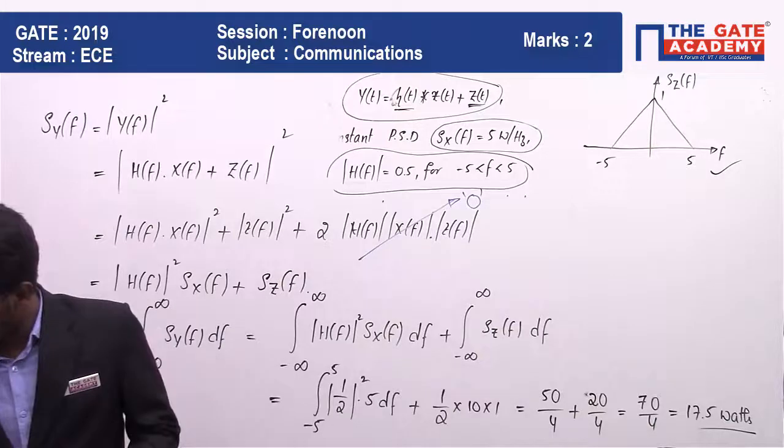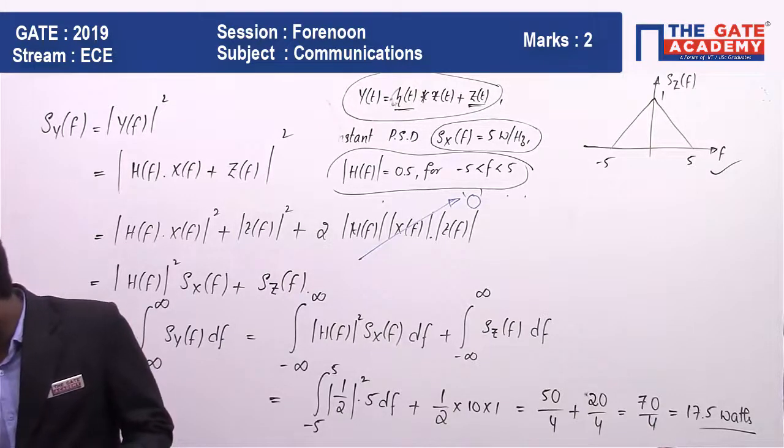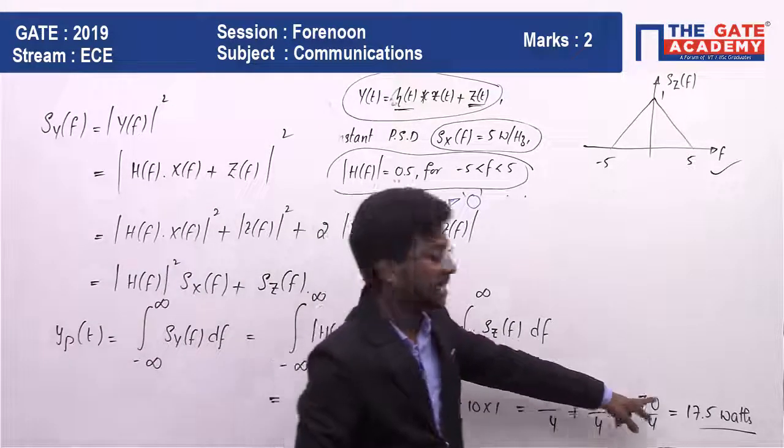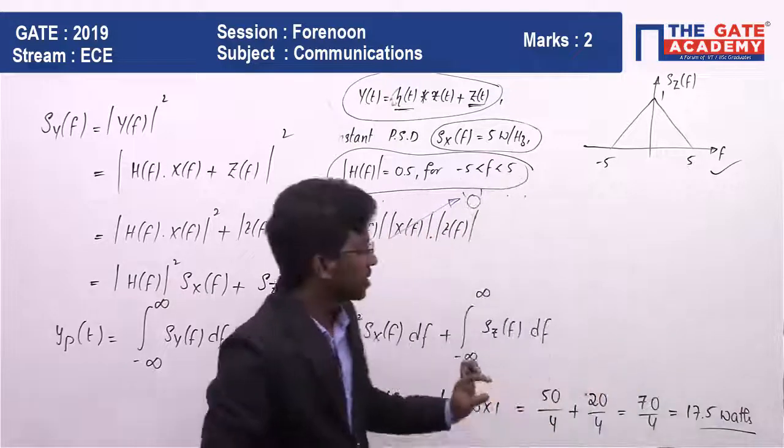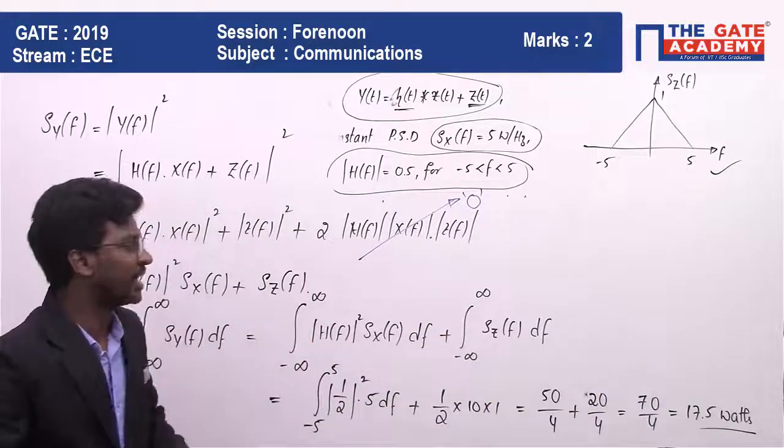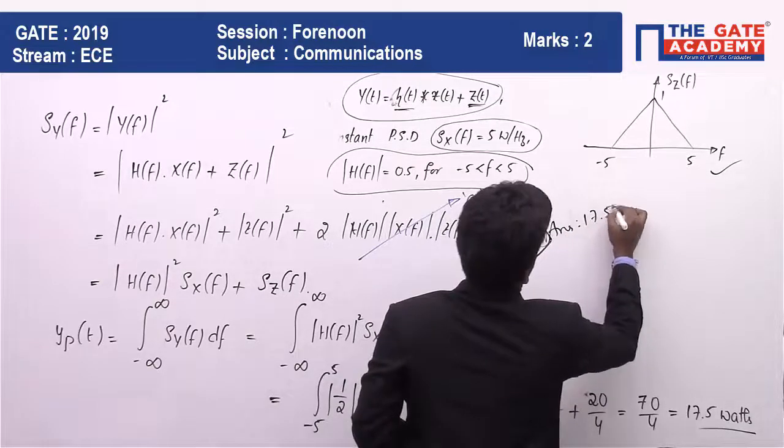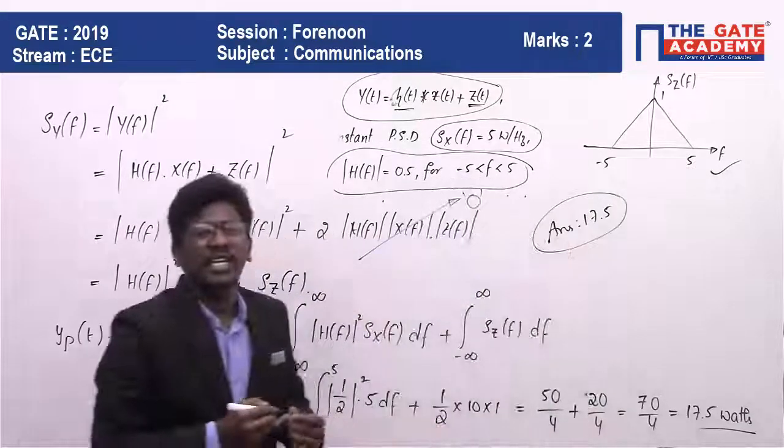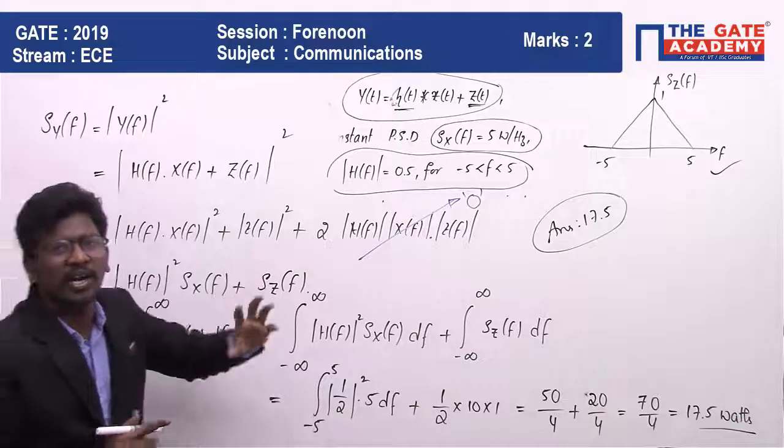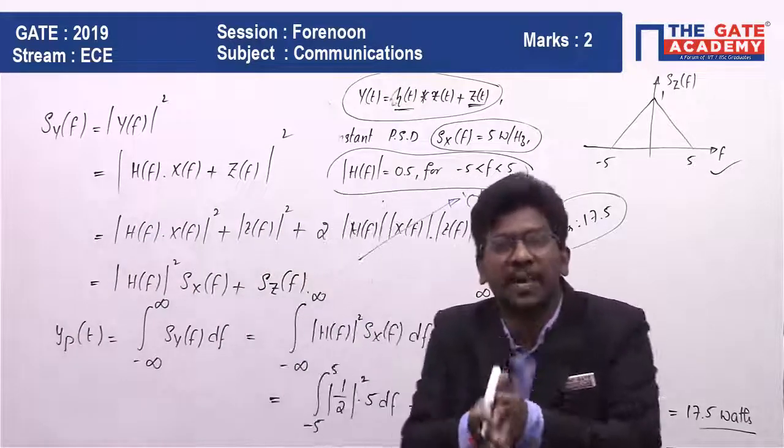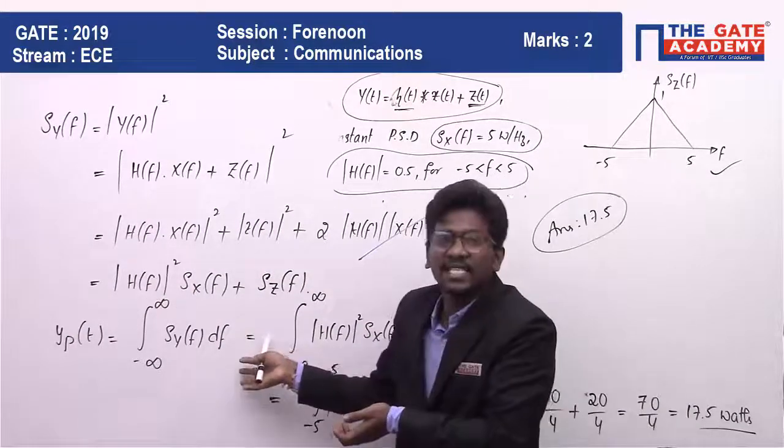If you solve this, you will be getting 17.5 watts. So 17.5 watts is the correct answer. 70 by 4, which is 17.5, is the right answer.